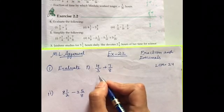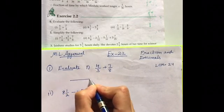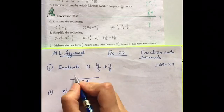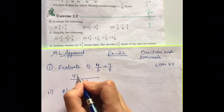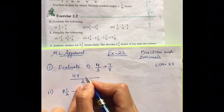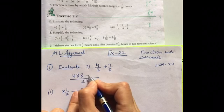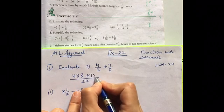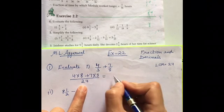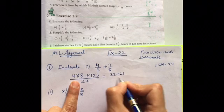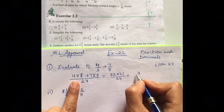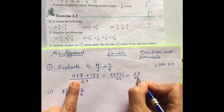Now, we will have to make them like. We can do it directly also. It's like 24. Then, write down what is there already. So, 4 multiplied by this 24 divided by 3. It is 8 plus 7 multiplied by 24 divided by 8 is 3. So, it is 32 plus 21 upon 24.